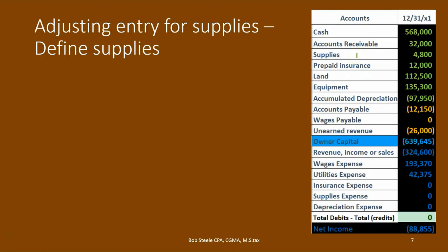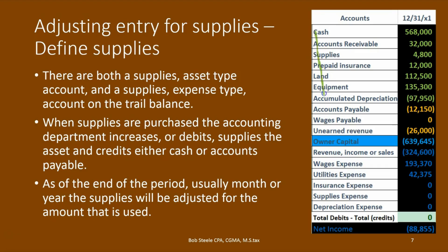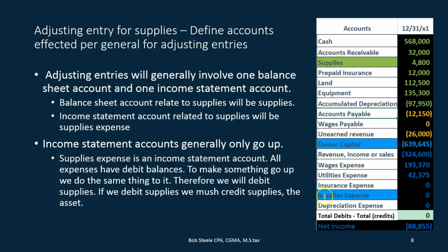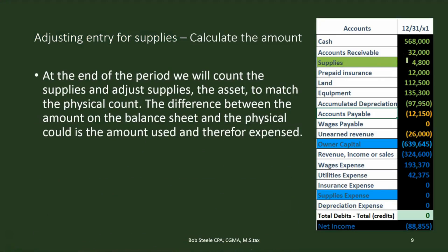For the supplies accounts, the balance sheet account above the line related to supplies is supplies, and the income statement account related to supplies is supplies expense. Since supplies expense is an expense account with a debit balance and expenses only go up, we increase it with a debit. If we debit supplies expense, and the other account affected is supplies, then we must be crediting supplies. We can figure that out through the rules before even fully knowing why we are doing it.